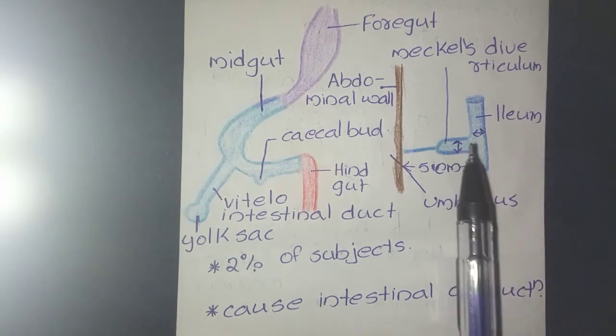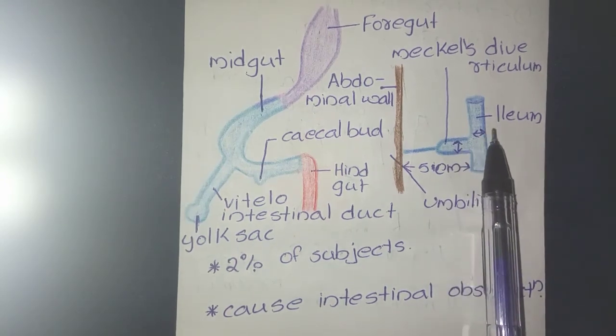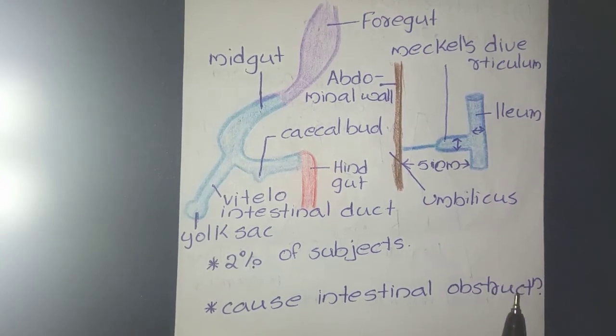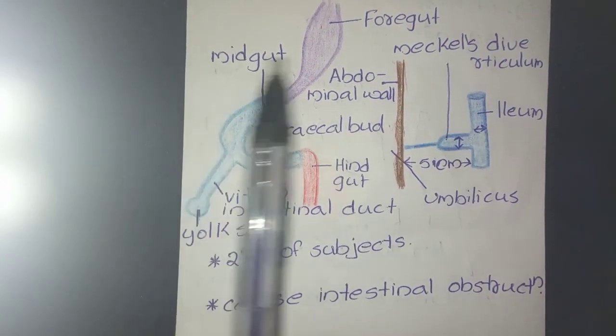The calibre of Meckel's diverticulum will be equal to that of the ileum and the clinical anatomy includes it causes intestinal obstruction. That's all for the topic Meckel's diverticulum.